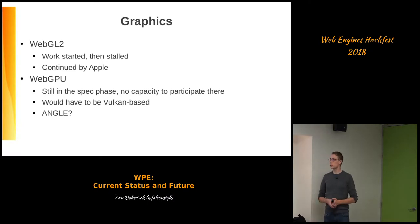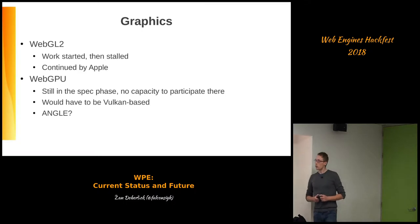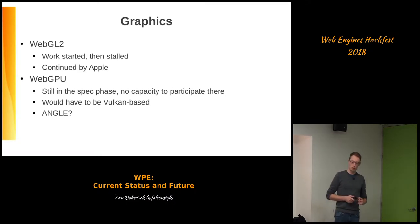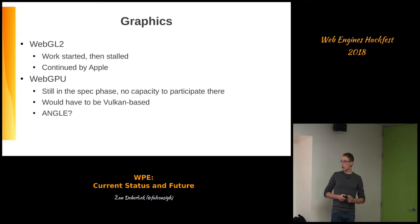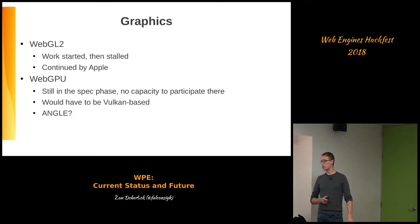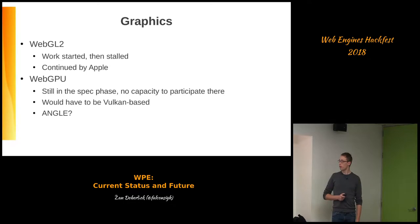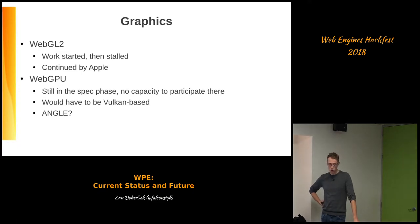WebGL 2 is something we started, then had to move away from because of other priorities. It's now being picked up by Apple inside the WebKit community — progress is ongoing. Another area of focus is WebGPU, this new thing trying to translate Vulkan or Metal APIs to the web. The spec is still in the specification phase and we don't have capacity to participate there. The implementation we'd work on would be Vulkan-based, or maybe like WebGL it could just be handled by ANGLE. Options are still open.